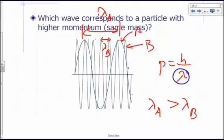So a bigger denominator means smaller momentum. So the momentum for particle A is going to be less than the momentum for particle B. Actually, they don't even have to have the same mass.